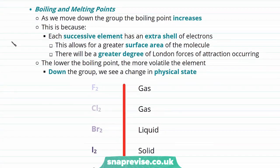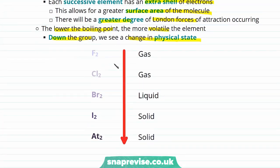The last trend is in the boiling and melting points. As we move down the group, the boiling point increases because each successive element has an extra shell of electrons, giving a greater surface area for the molecule. As a result, there's a greater degree of London forces of attraction. The lower the boiling point, the more volatile the element, so down the group we see a change in physical state: fluorine and chlorine are gases, bromine is a liquid, and iodine and astatine are solids at room temperature.